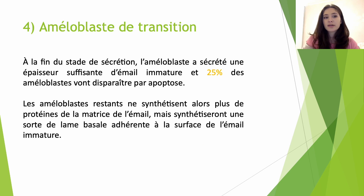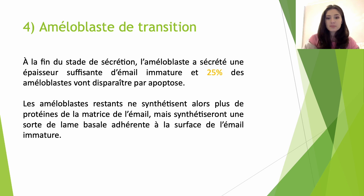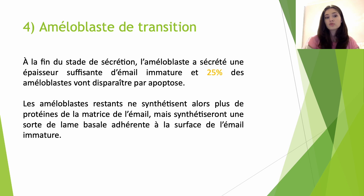On arrive au stade de l'améloblaste de transition. À la fin du stade de sécrétion, l'améloblaste aura sécrété une épaisseur suffisante d'émail immature. À ce moment-là, 25 % des améloblastes vont totalement disparaître par le mécanisme d'apoptose, une mort cellulaire. Les améloblastes qui vont rester ne vont plus synthétiser de protéines de la matrice de l'émail, mais synthétiseront une sorte de lame basale adhérente à la surface de l'émail immature.